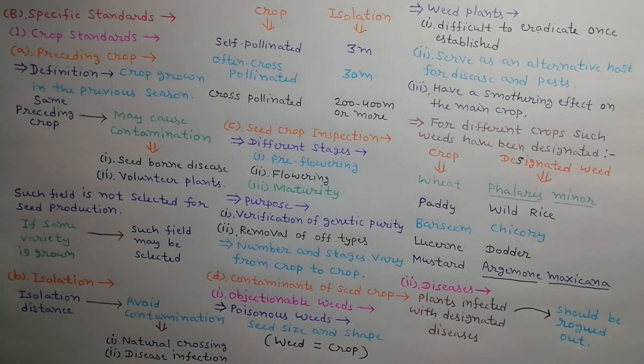All the plants infected with the designated diseases should be rogued out, such as loose smut of wheat, grain smut of sorghum, smut, ergot and earner disease of bajra, mosaic of peas and tomato, mosaic, brown rot, scab and wart of potato.